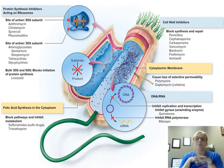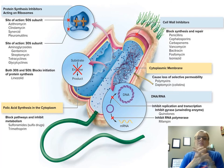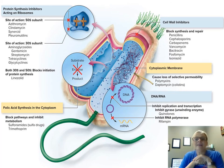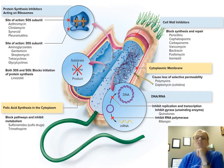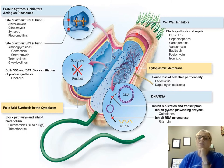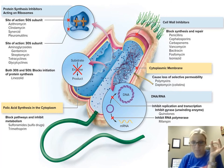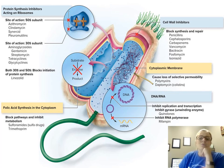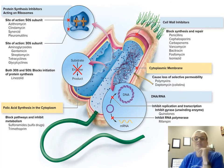Protein synthesis inhibitors target ribosomal subunits. Erythromycin and clindamycin target the 50S subunit. Gentamicin and streptomycin target the 30S subunit. Tetracyclines target both 30S and 50S subunits. By disrupting ribosomal function, you block translation and protein synthesis — if you destroy the machine, you can't make the product. Folic acid synthesis inhibitors like sulfonamides (sulfa drugs) block metabolic pathways in the cytoplasm. Cell wall inhibitors like penicillin, cephalosporins, vancomycin, and bacitracin block synthesis and repair of the cell wall.